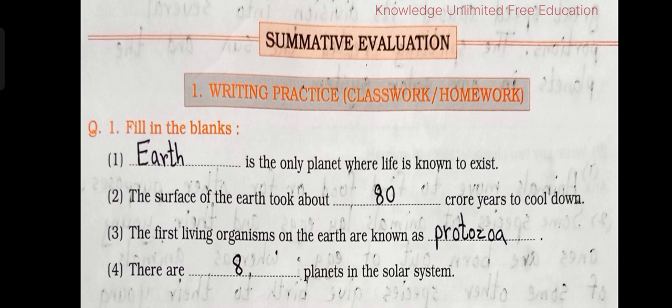Question number 1: Fill in the blanks. Number 1 — Dash is the only planet where life is known to exist. Answer: Earth.